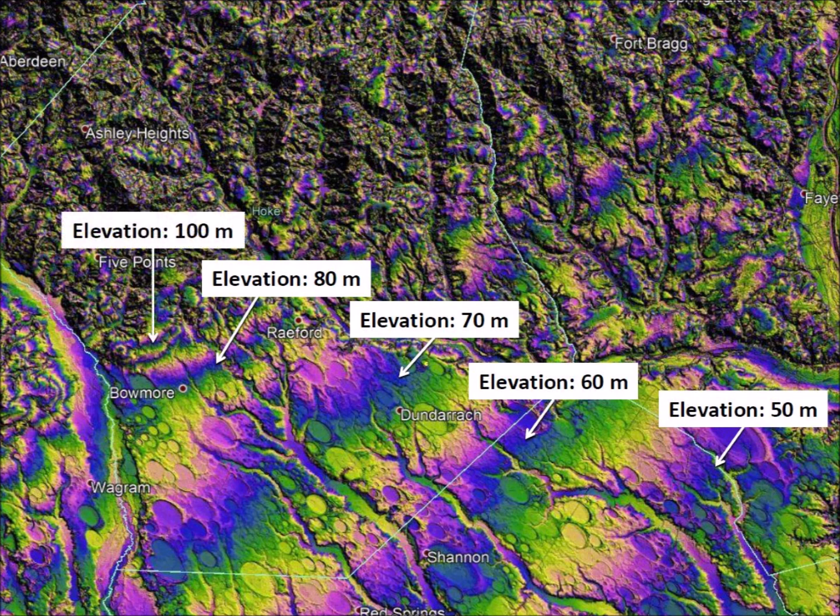At the boundary of the elevated terrain and the coastal plain, the 10 meter contour lines are separated by only 1.5 kilometers. This image shows that the Carolina Bays are present on flat terrain, but not on the rough terrain.